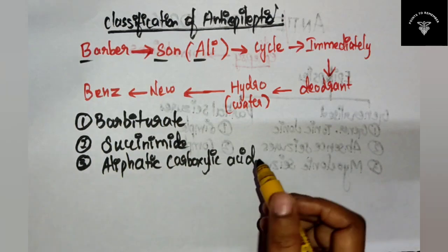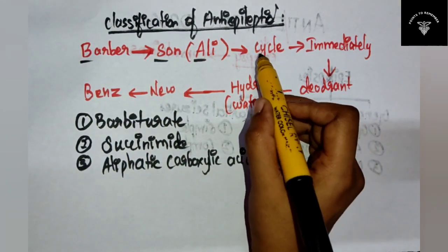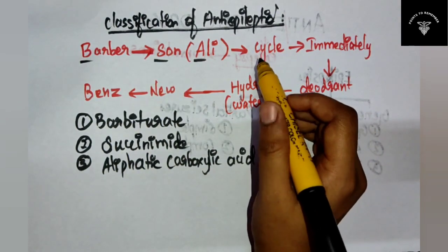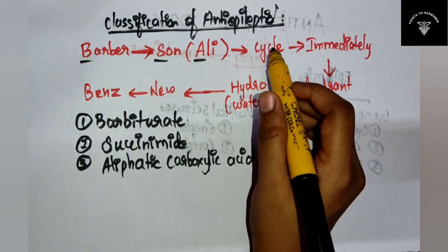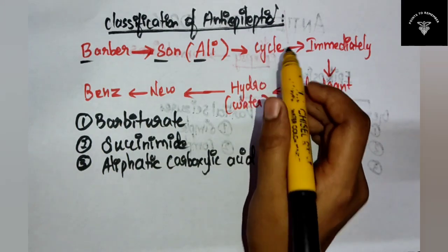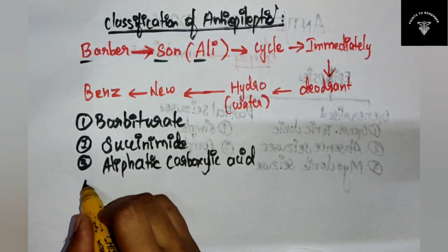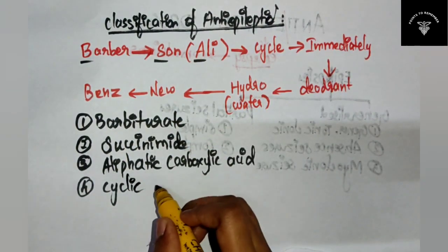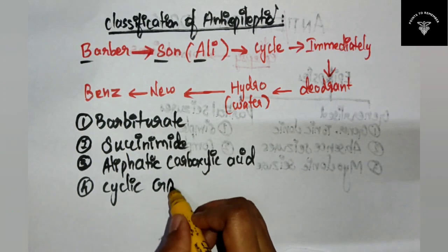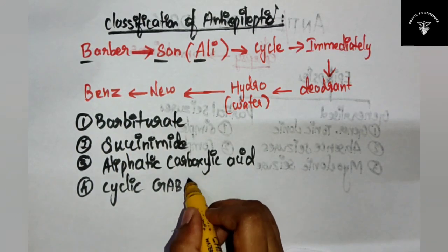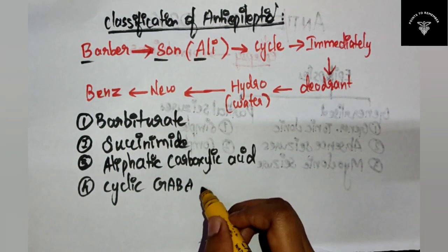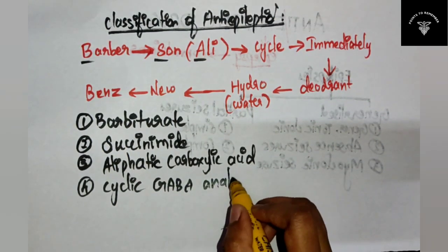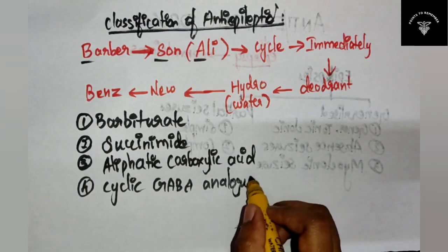And fourth is the cycle - cycle stands for cyclic GABA analog.